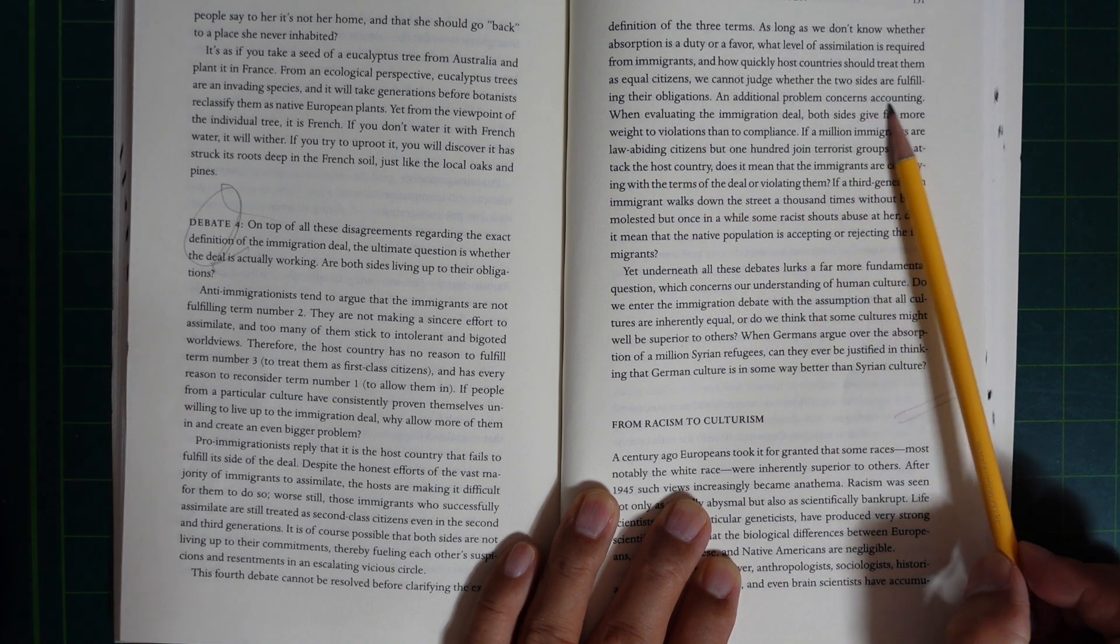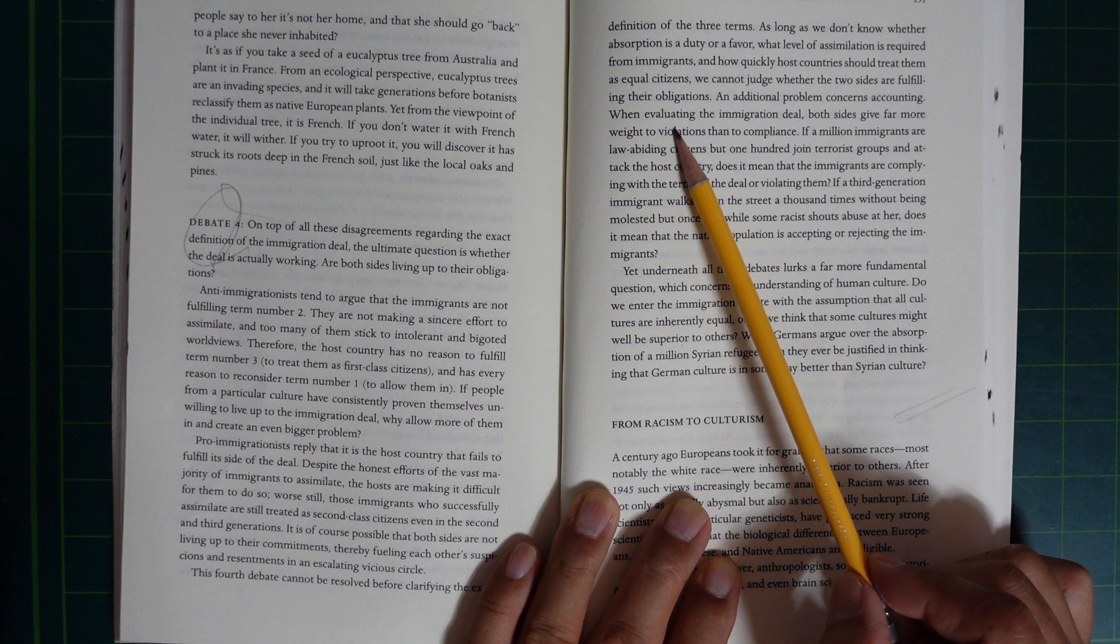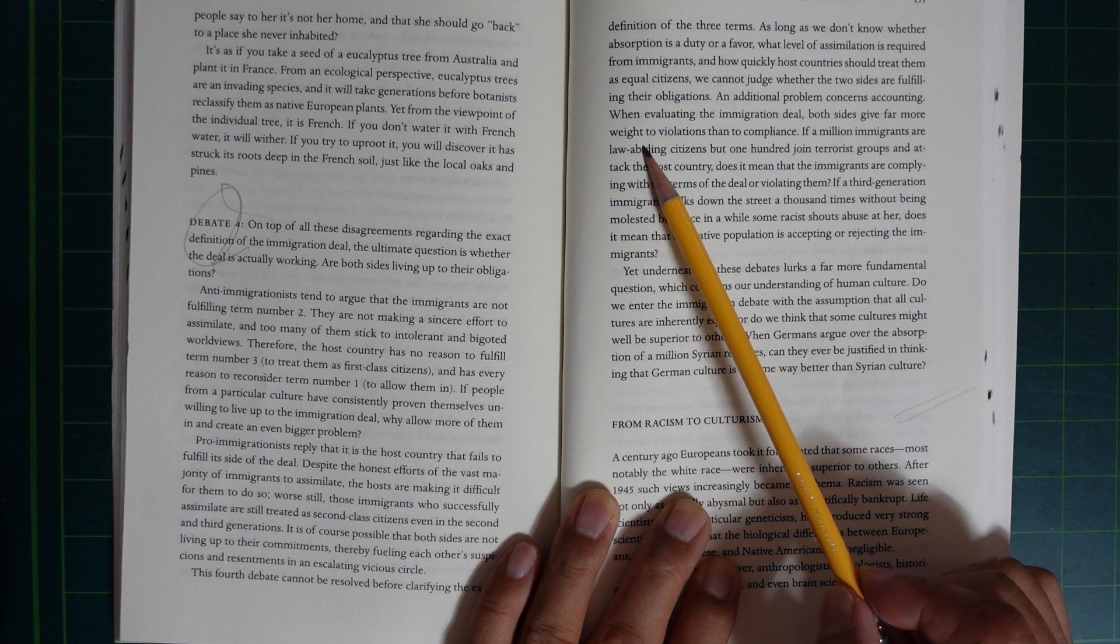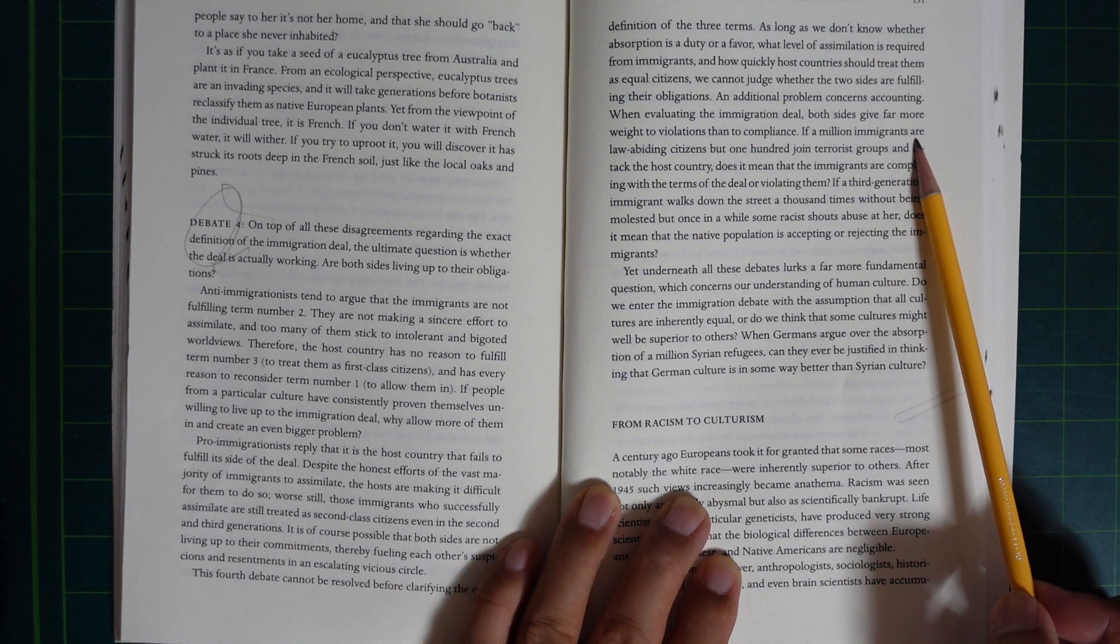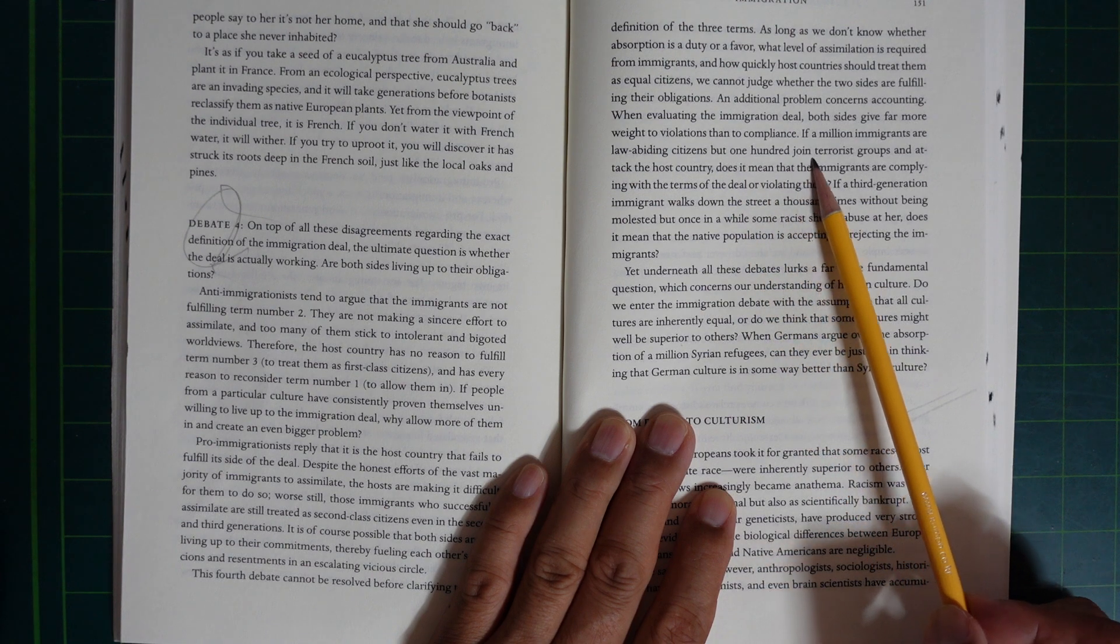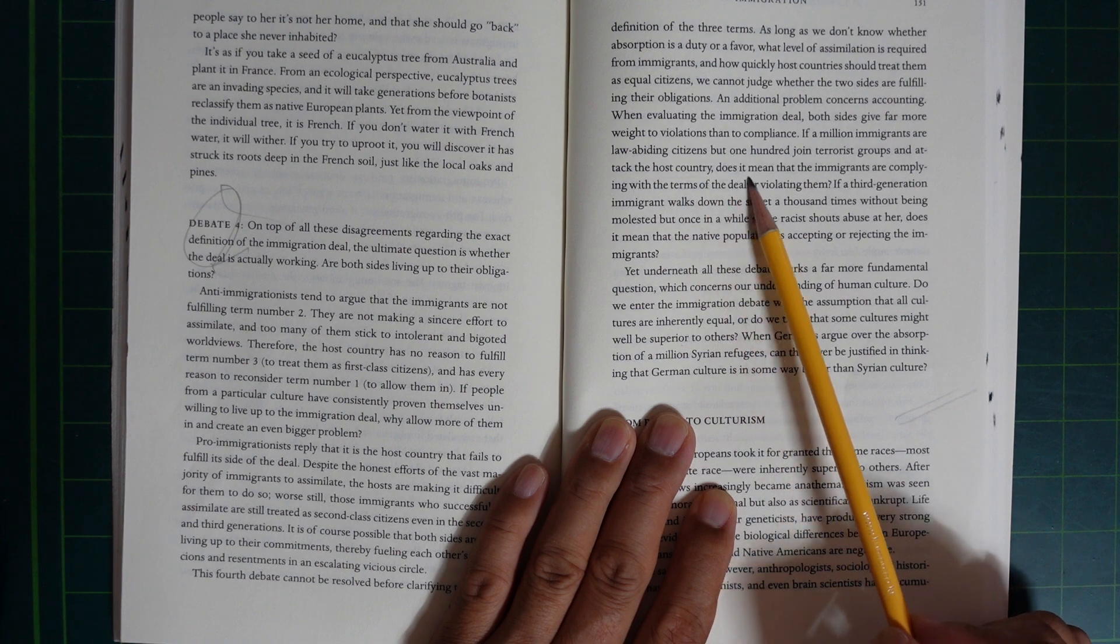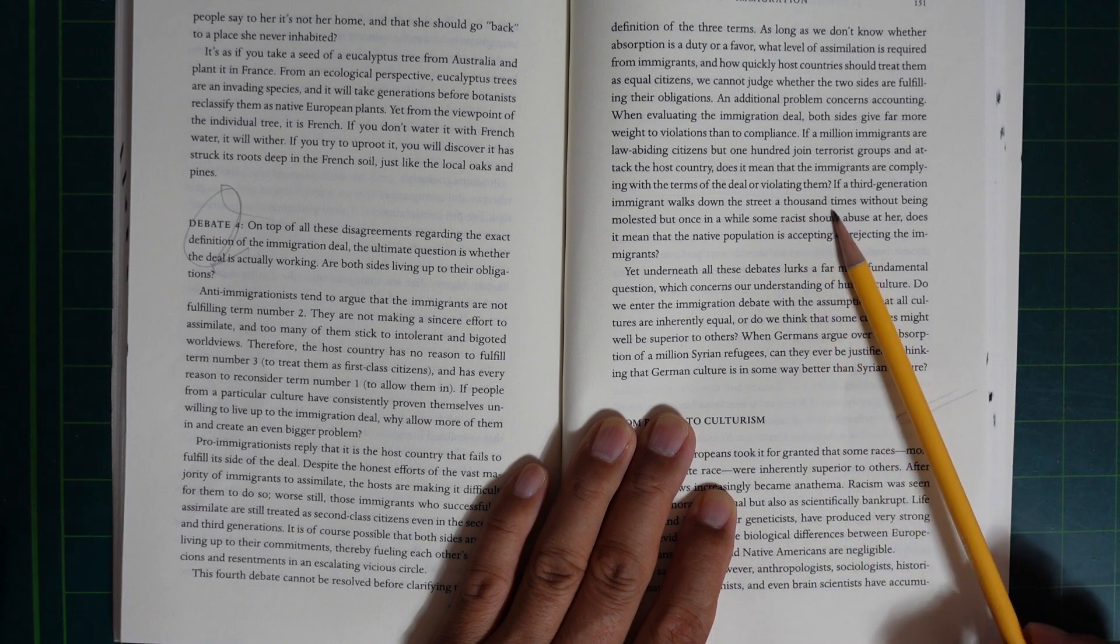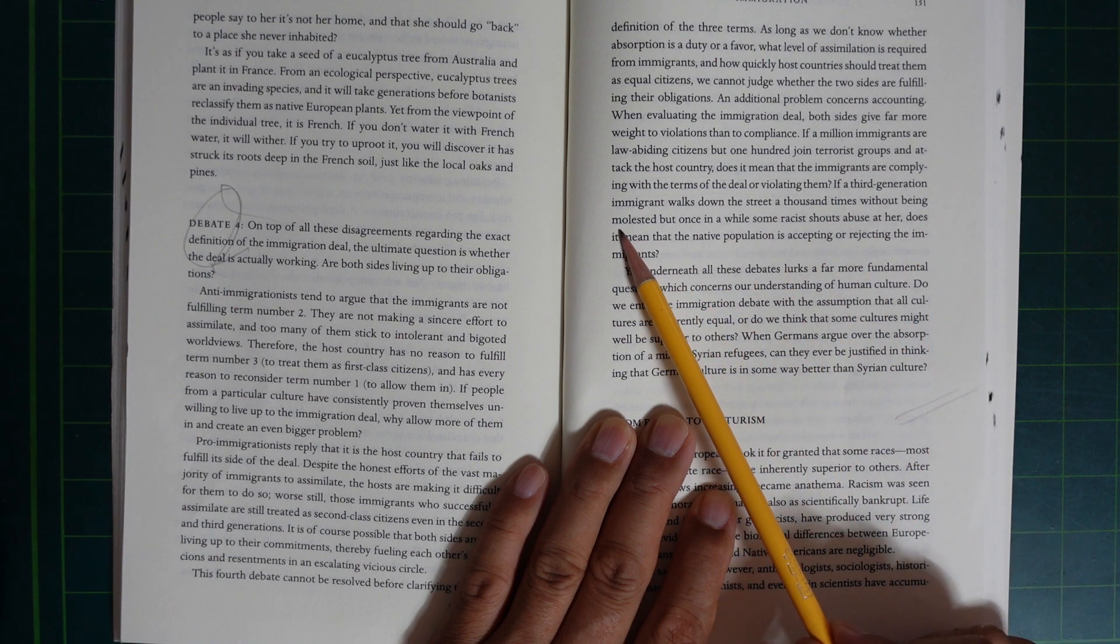The additional problem concerns accounting. When evaluating the immigration deal, both sides give far more weight to violations than to compliance. If a million immigrants are law-abiding citizens but one hundred join terrorist groups and attack the host country, does it mean that immigrants are complying with the terms of the deal or violating them?